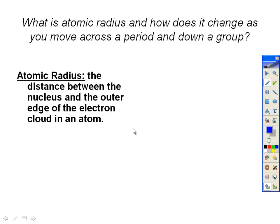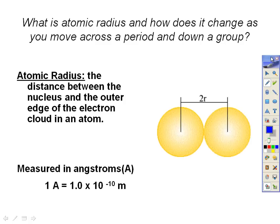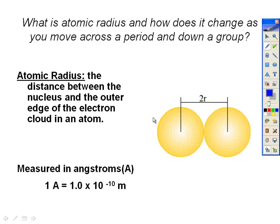In your book, or if you Google covalent atomic radius, it will actually say between two nuclei of adjacent atoms, because atoms don't really exist all by themselves. You have to have two next to each other, and then they take 2r as the diameter, so you just cut that in half and that gives you your radius. In an atom, that's going to be the nucleus to the outer edge of the electron cloud.